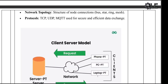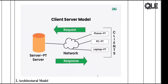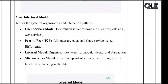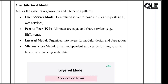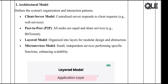Next we have the architectural model, which focuses on how the system is organized. There are different types of architectures. Client-server: a central server handles requests from clients — this is how most websites work. Peer-to-peer: all devices are equal; everyone can be both a client and a server, like how BitTorrent works.